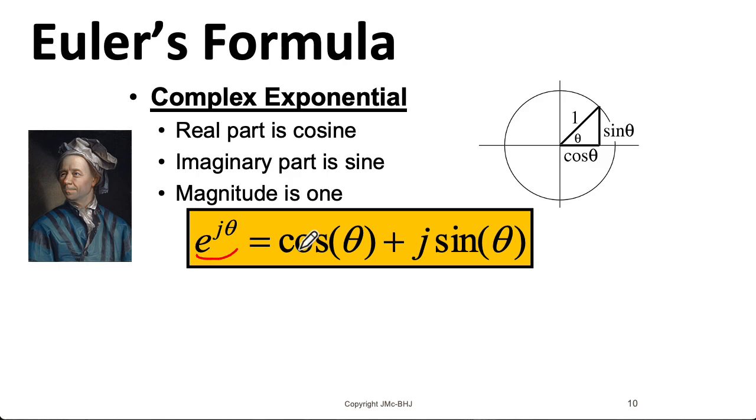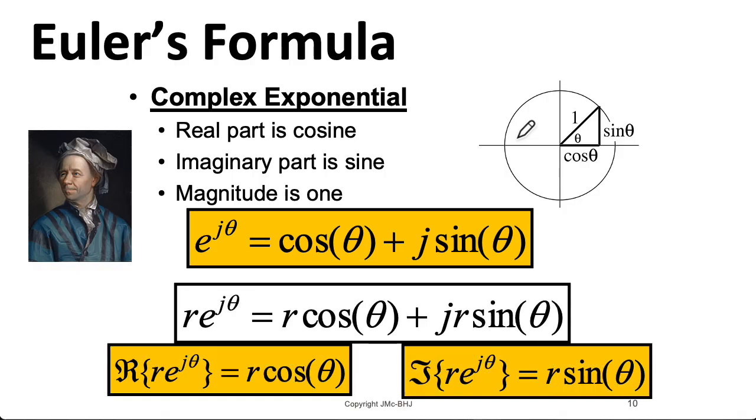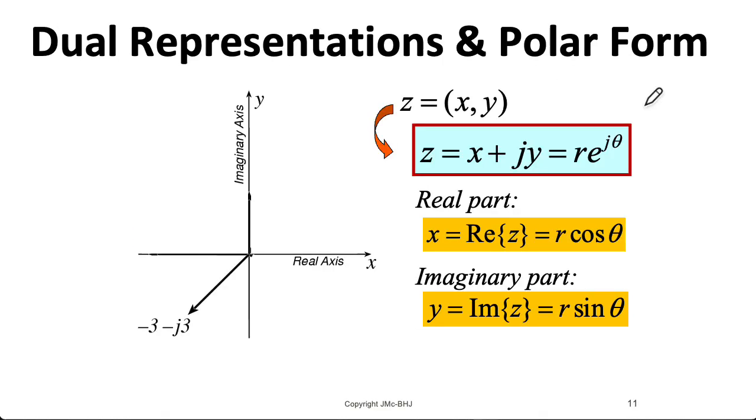Now, considering the magnitude of this, recall the trig identity that says that cosine squared theta plus sine squared theta equals 1. So this has a magnitude of 1, and as you increase theta, you basically spin around the unit circle. And if I want a vector with a different magnitude, I can just multiply everything by r.